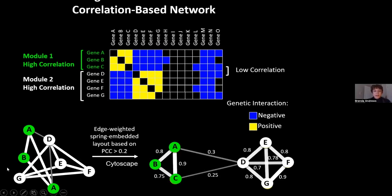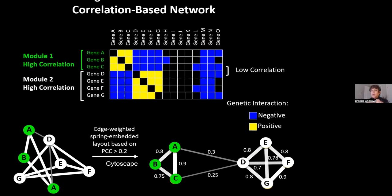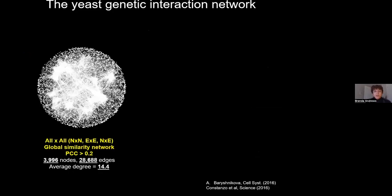One of the most useful ways to present this is using a Cytoscape plugin where we weight the edge based on the degree to which two mutants share genetic interactions in common. For example, gene A and B sharing 80% of their genetic interactions are joined by a short edge; A sharing 30% with D is joined by a longer edge. The idea is that if genes share a lot of genetic interactions, they might be functioning in a similar bioprocess or pathway. This is shown in the global all-by-all similarity network at a certain Pearson correlation cutoff.